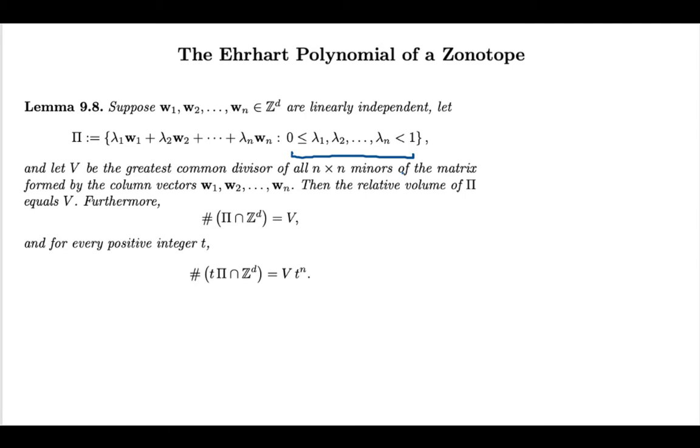And so now what we need is that we will compute all n by n minors. So these are the largest square sub-matrices of the n by d matrix formed by those vectors as column vectors. And then we will compute the GCD of those minors, and the claim is that the GCD of those minors is the relative volume of the parallel pipette. And once you have this, the number of integer points and the Ehrhart polynomial, if you want, of this half-open parallel pipette, will be given by this GCD times the appropriate power of t.